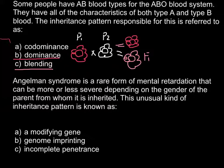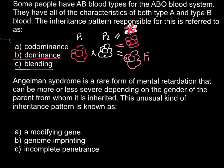And if we have codominance, we would have a flower that is red and white simultaneously — patches of pure red color and patches of pure white color. This is codominance: when two characteristics are expressed simultaneously.